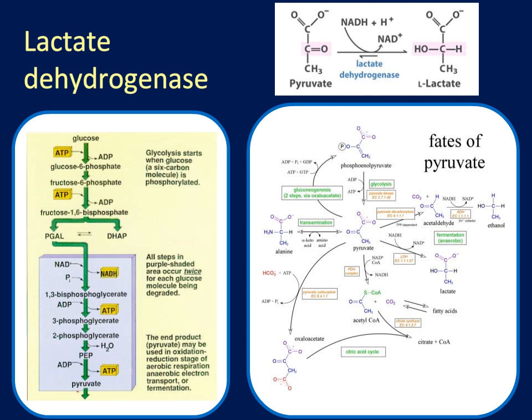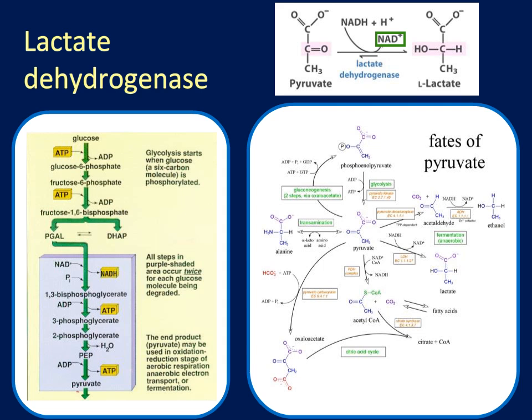The reaction, schematically drawn in the top right, outlines the reaction that lactate dehydrogenase catalyzes. Pyruvate plus NADH and a proton produce NAD and L-lactate. This is an L-LDH — that is, the lactate dehydrogenase is specific to L-lactate, not D-lactate.